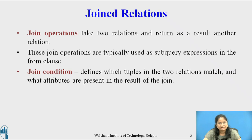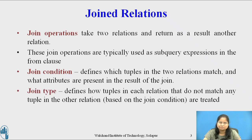Join condition defines which tuples in two relations match and what attributes are present in the result of the join. Join type defines how tuples in each relation that do not match any tuple in the other relation are treated.